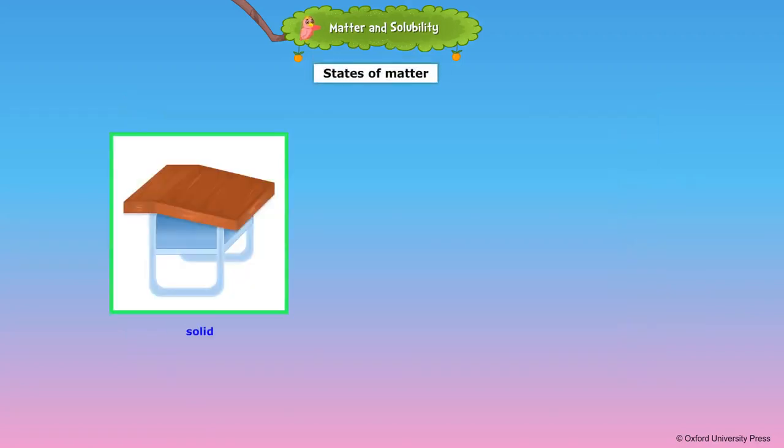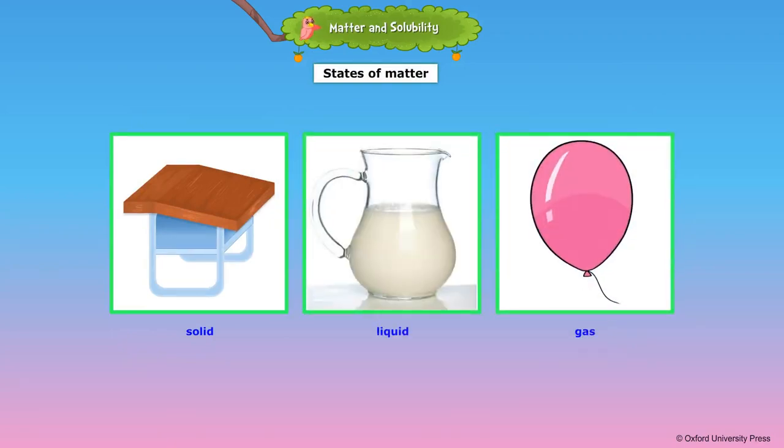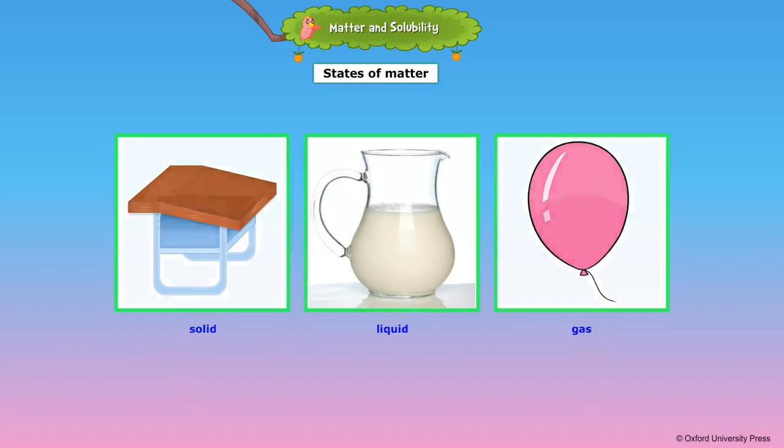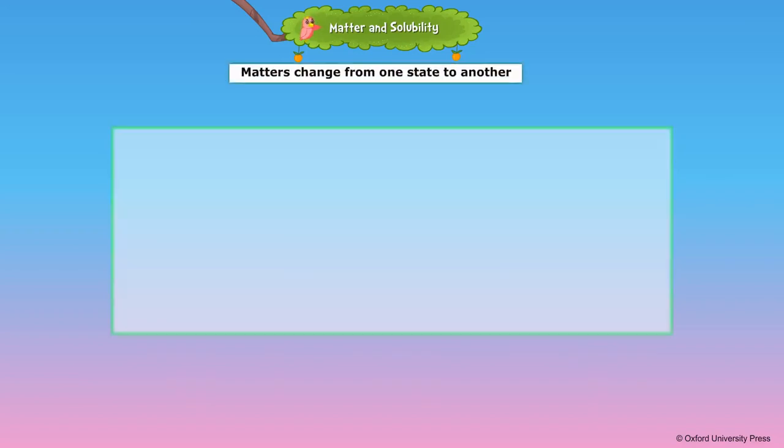Matter exists in three forms: solid, liquid, and gas. Solids have fixed shapes. Liquids take the shape of the container that holds them, and gas spreads out and fills the whole container. Matter can change from one form to another.